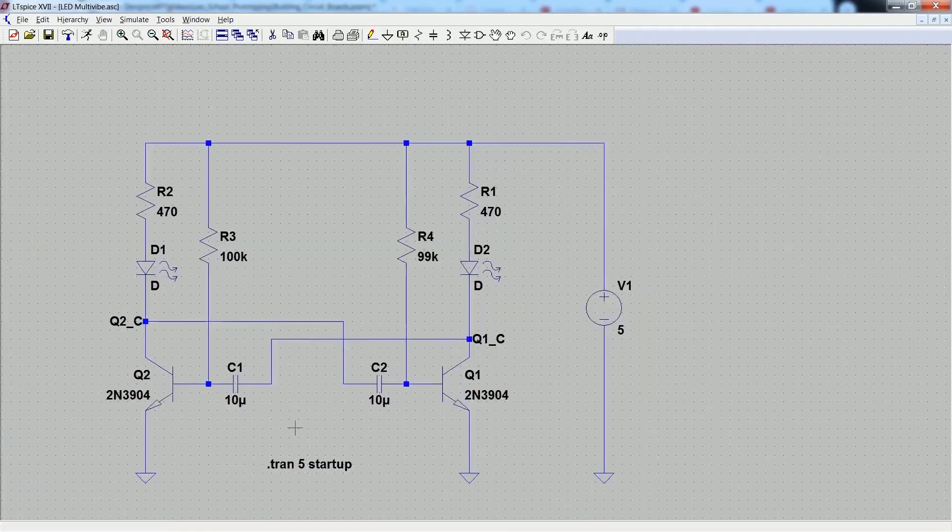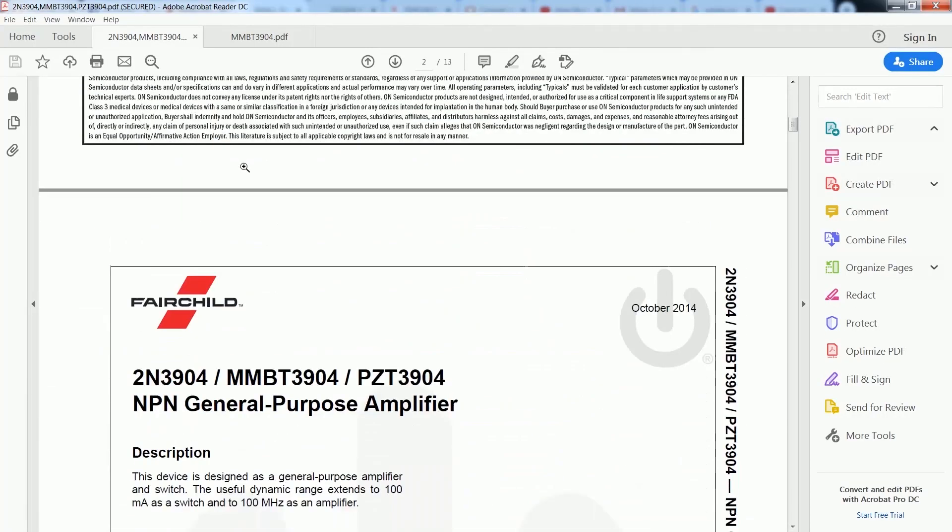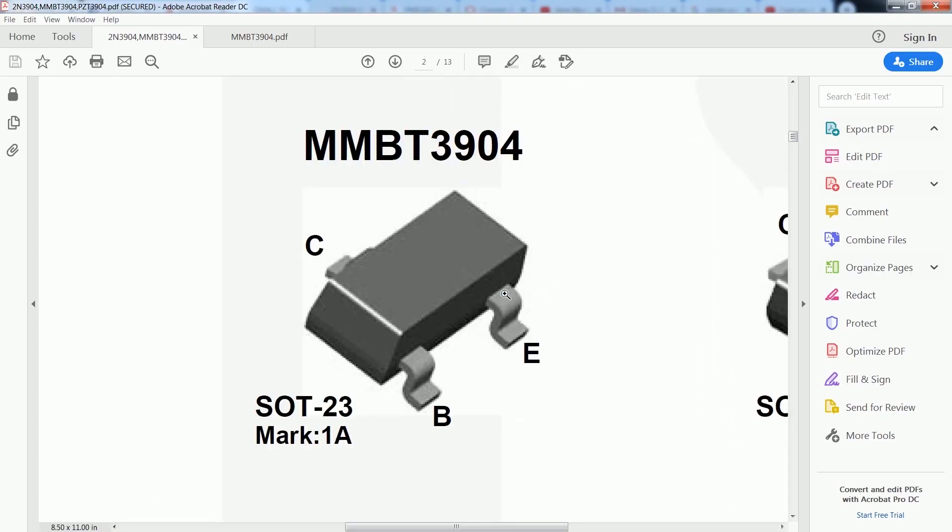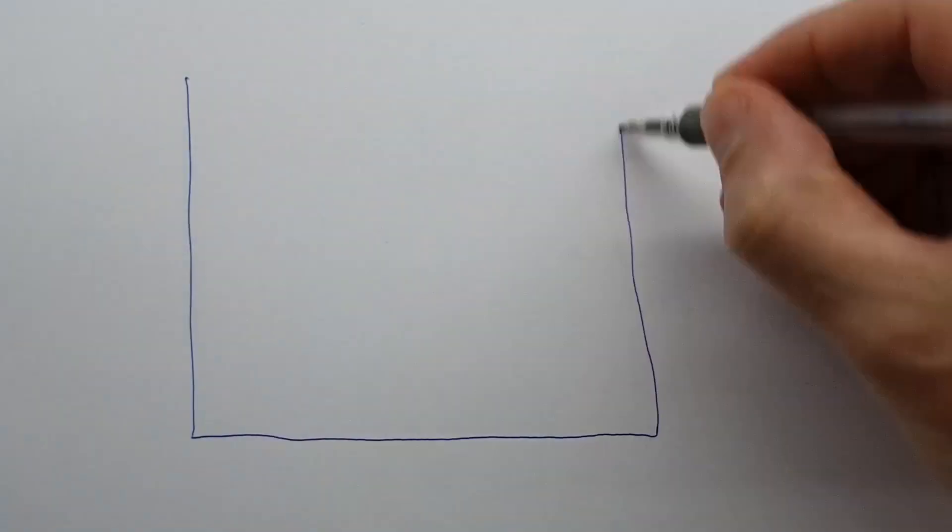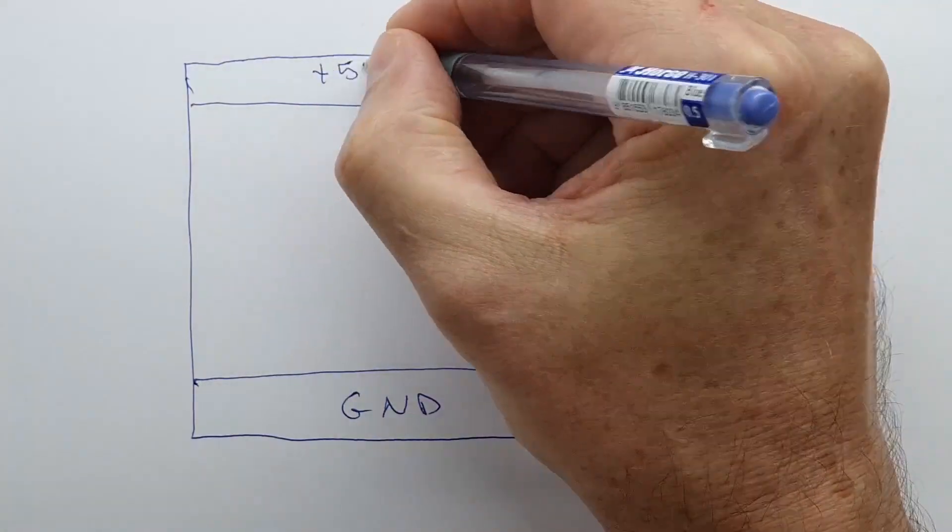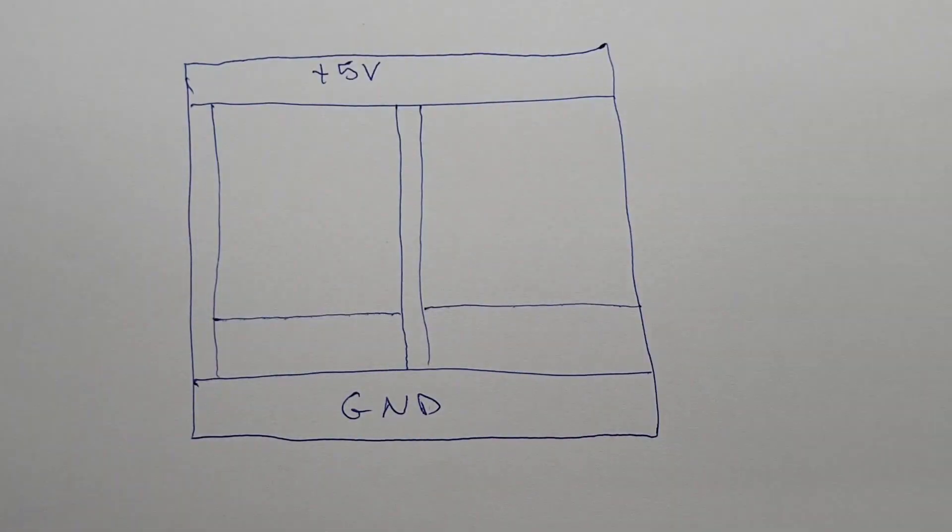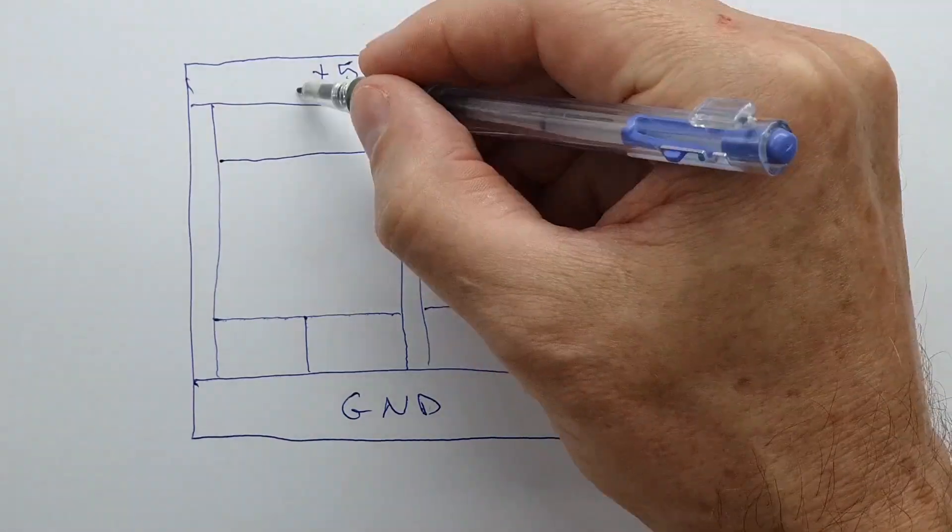Once you have finalized your schematic design, it's time to build. You need to totally agonize over the data sheets. Confirm the pin layout of every part really carefully. Lay out your board using straight lines. These are the easiest to cut. Each island becomes a node in your circuit. Place the components to make the best use of these islands.